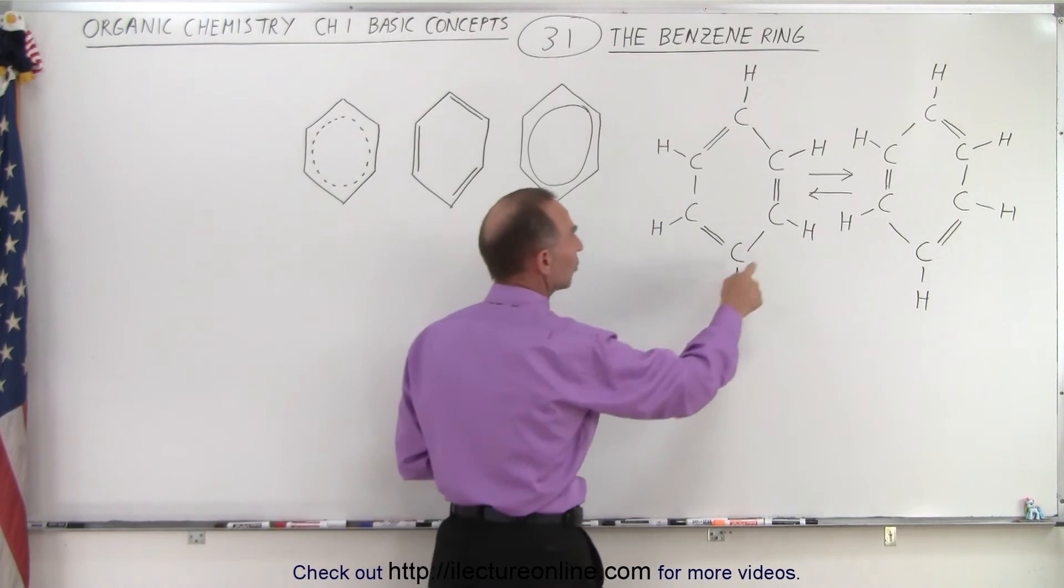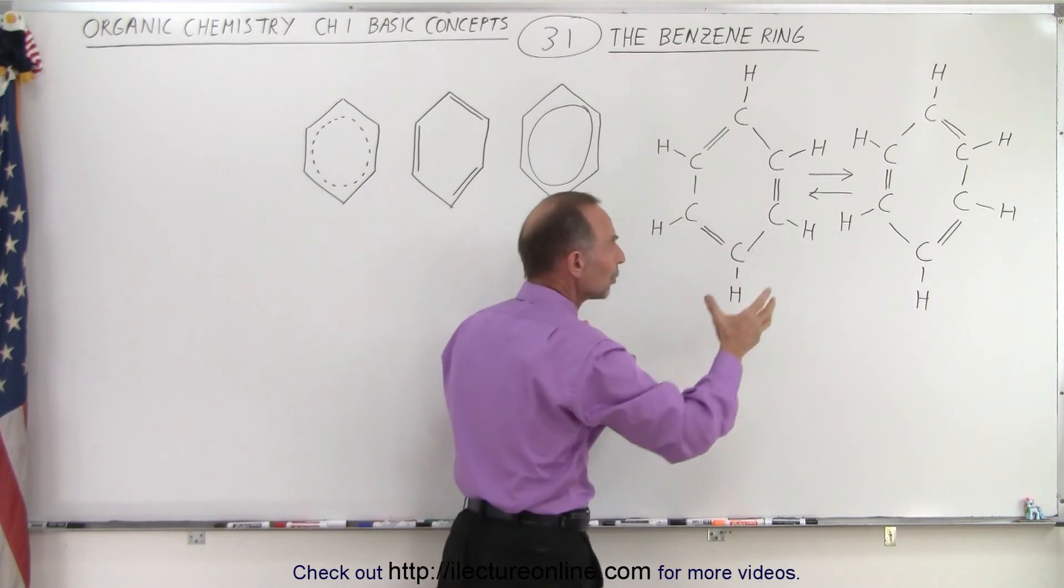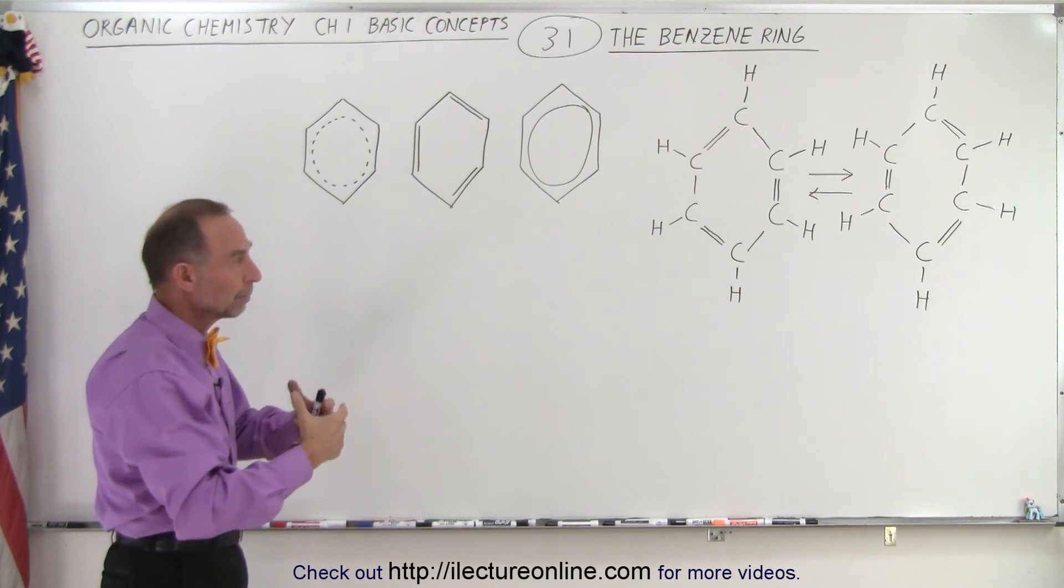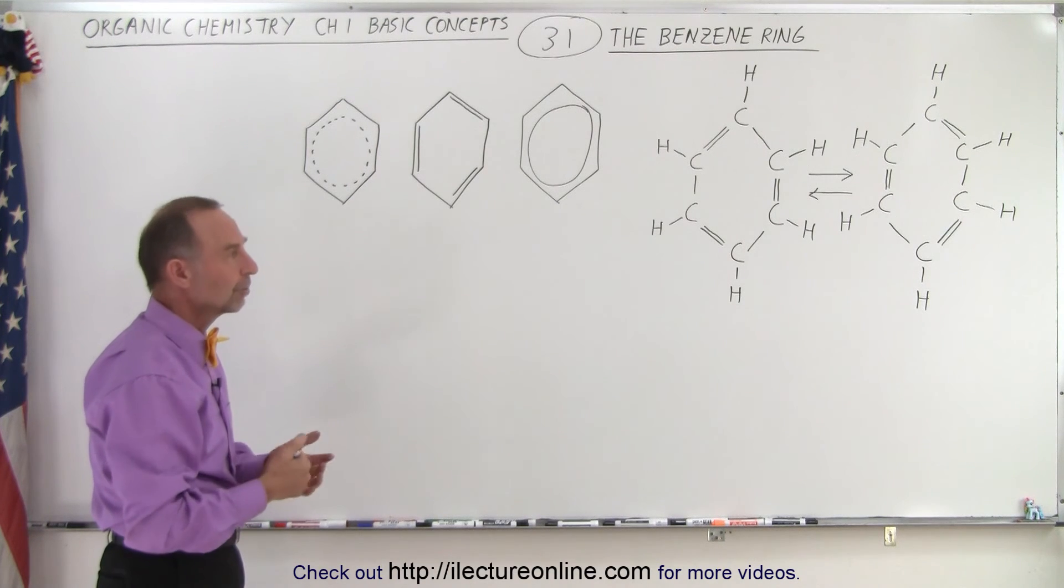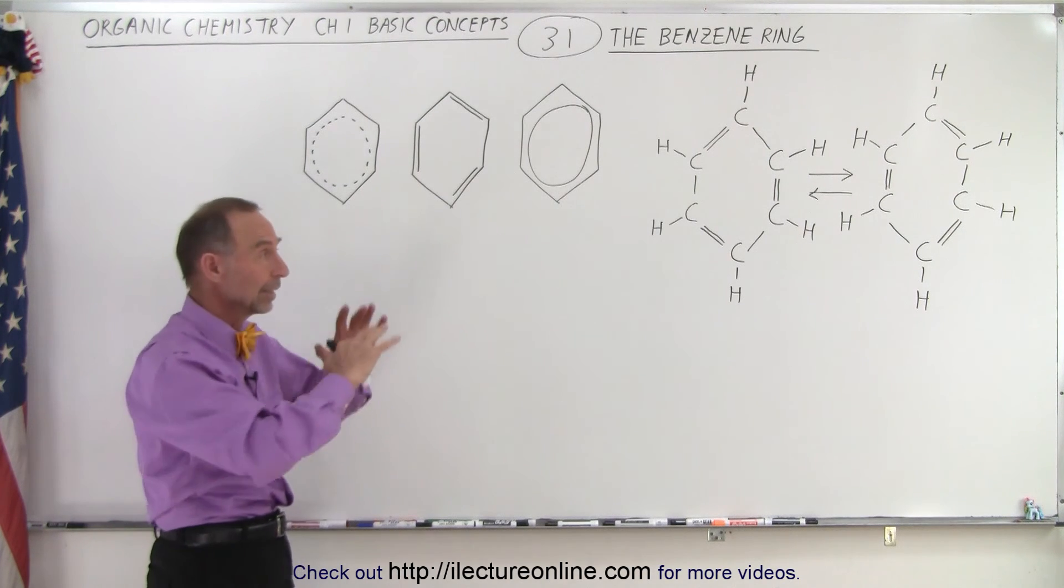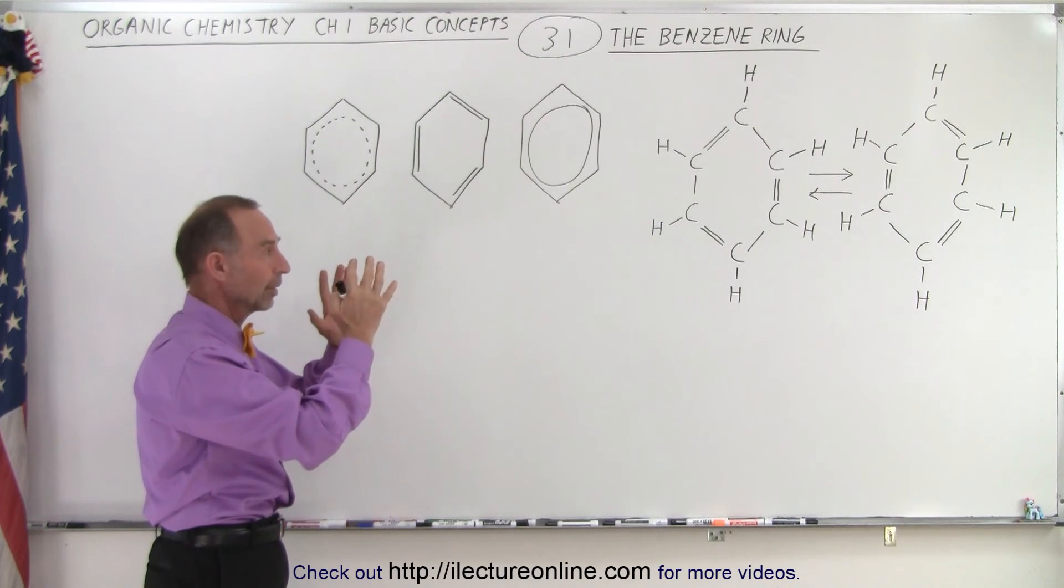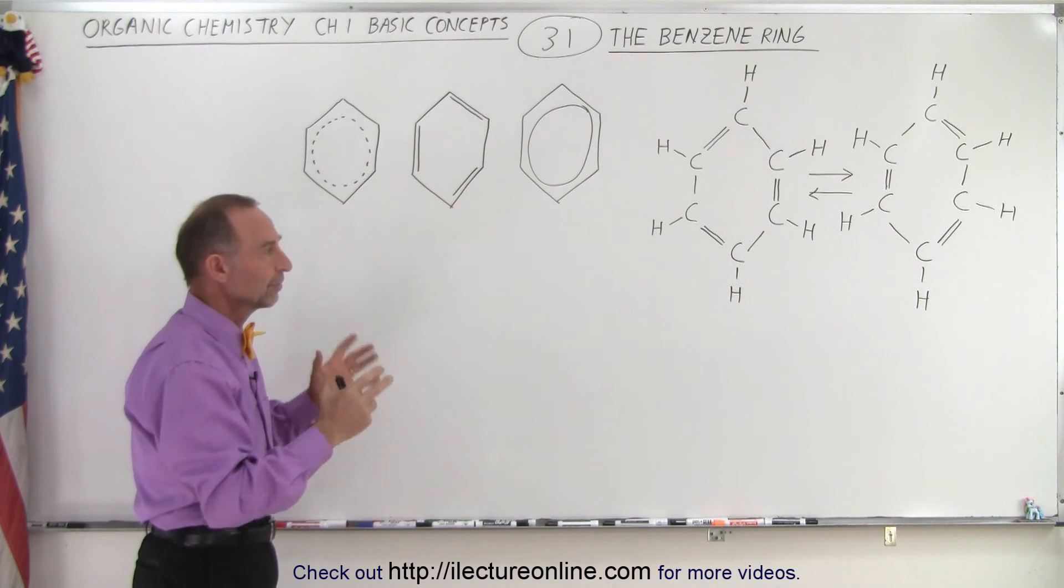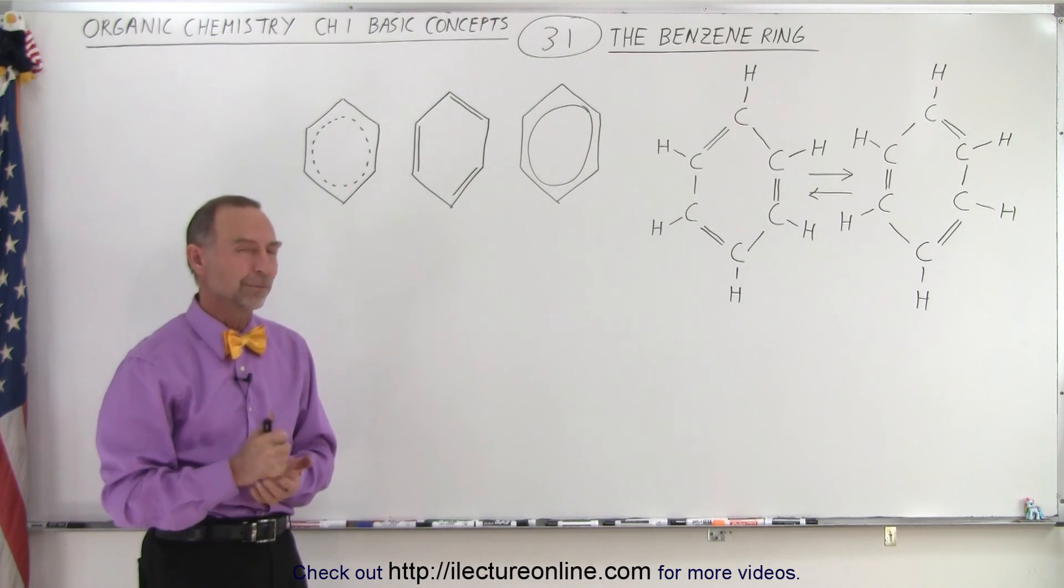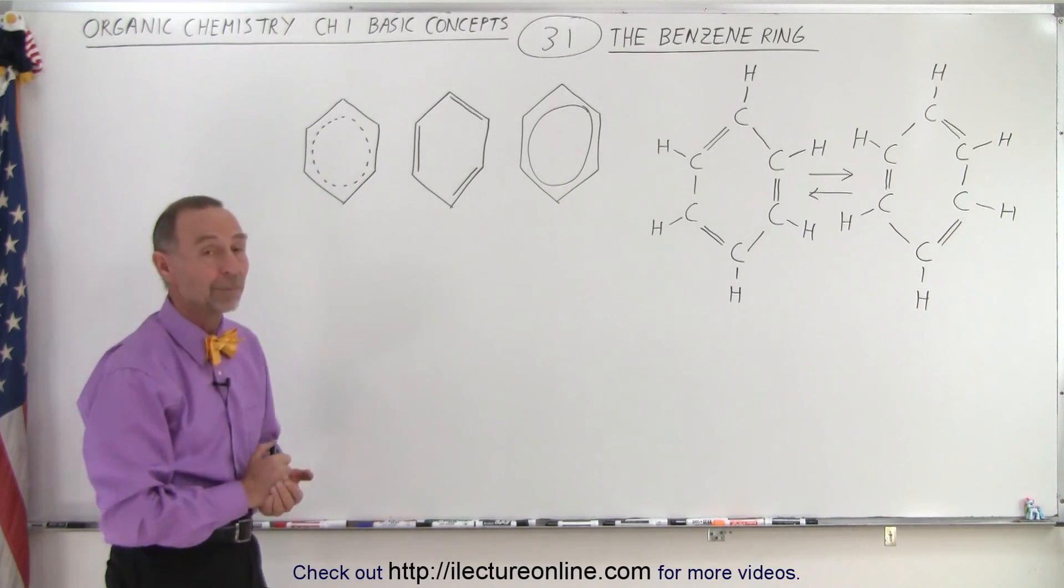Of course we can replace these hydrogens with other groups, and when we do that we'll see some other types of benzene ring molecules. There's a bunch of them and we'll take a look at some of these specific ones, so you can see how that's kind of a basic startup of a whole set of different molecules that use the benzene ring as a starting point. Stay tuned and we'll show you some examples of that as well.